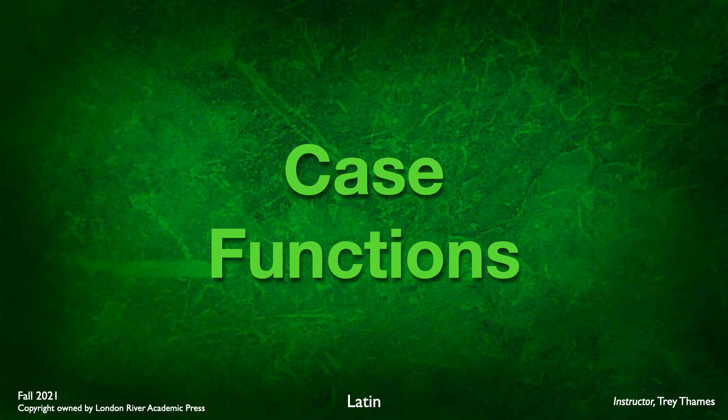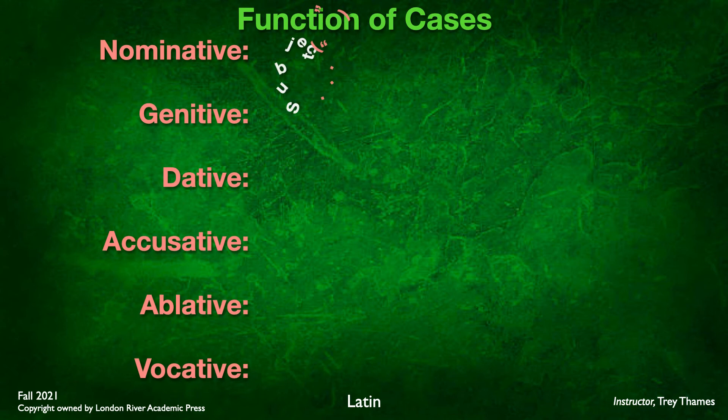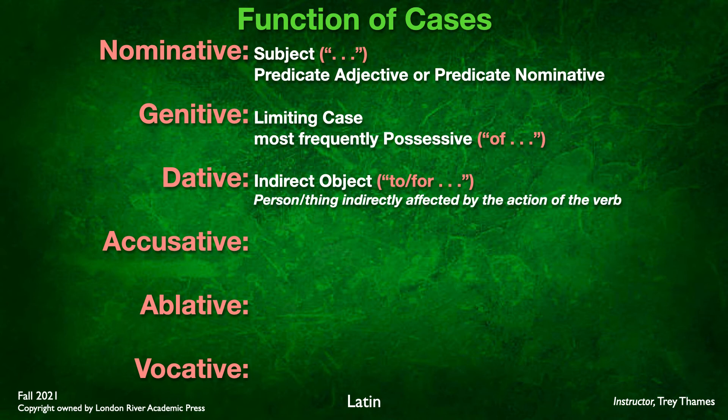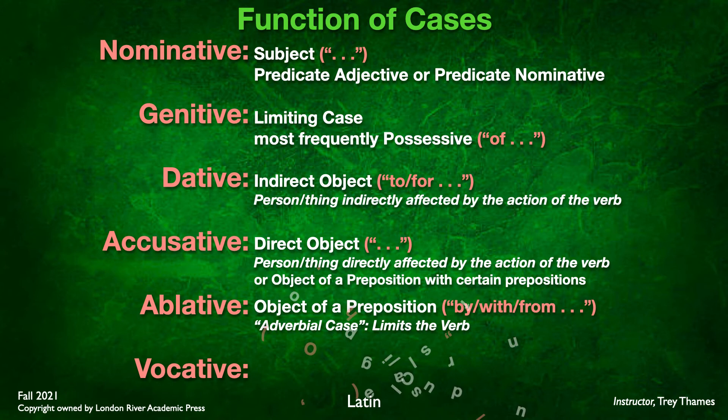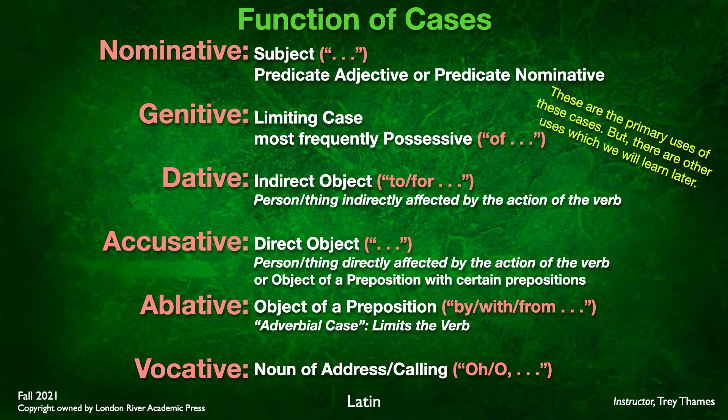What do these cases mean — nominative, genitive, dative, accusative, ablative, and vocative? It's the function of how that word operates in a sentence. A word in the nominative case is generally the subject of the sentence. It could also be a predicate adjective or predicate nominative — a noun or adjective after the verb that describes or renames the subject. But nominative is the naming case; it names who's doing the action.